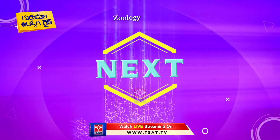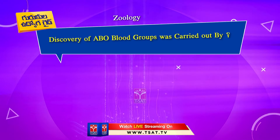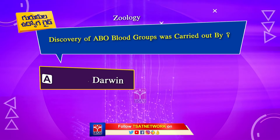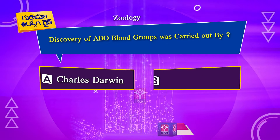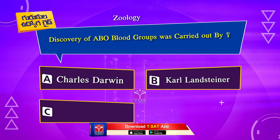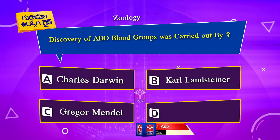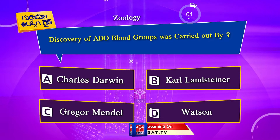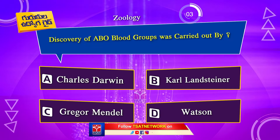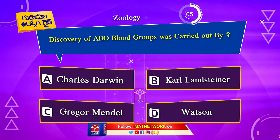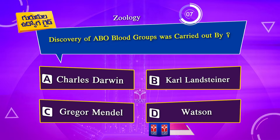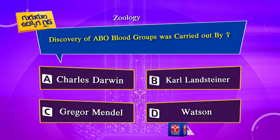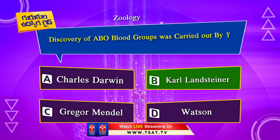Next question. Discovery of ABO blood groups was carried out by: Option A. Charles Darwin. Option B. Karl Landsteiner. Option C. Gregor Mendel. Option D. Watson. The correct answer is Option B. Karl Landsteiner.